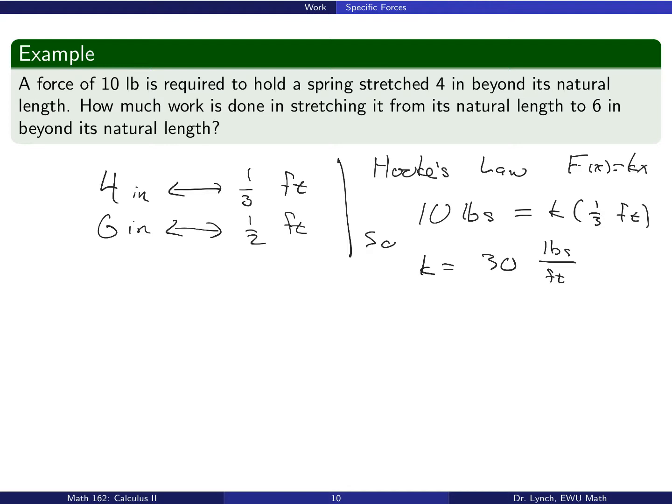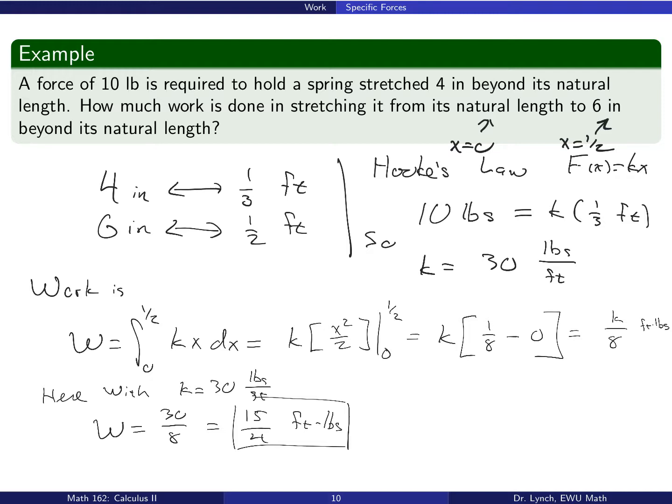Now we'll use that value of k in answering this question of how much work is done to stretch the spring from its natural length, or x equals 0, to 6 inches beyond its natural length, or x equals 1 half. In this case, we see that the work is the integral from 0 to 1 half of kx dx. Power rule for antiderivatives, fundamental theorem of calculus, the work is k over 8 foot pounds. Now, of course, in this case, k is 30, and that gives us the value of the work of 15 fourths foot pounds.